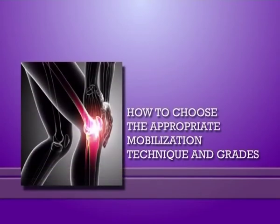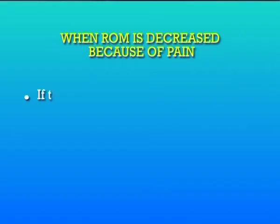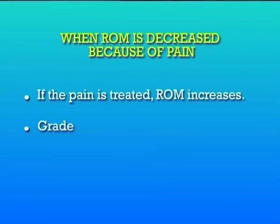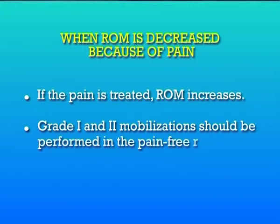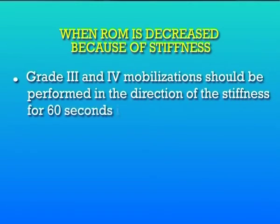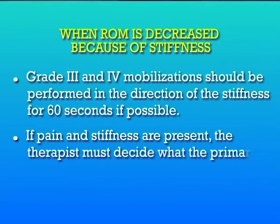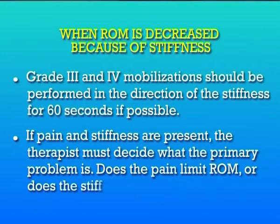The next topic is how to choose the appropriate mobilization technique and grades. When the range of motion is decreased because of pain, if the pain is treated, range of motion increases. Grade one and grade two mobilization should be performed in the pain-free range for 30 seconds. Function should be assessed after mobilization to determine whether any changes have been achieved. If pain and stiffness are present, the therapist must decide what the primary problem is — does the pain limit range of motion or does the stiffness cause the pain?